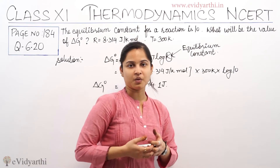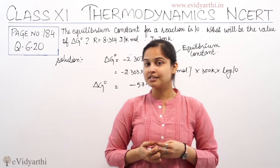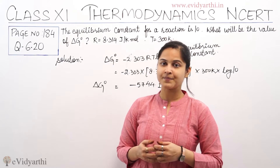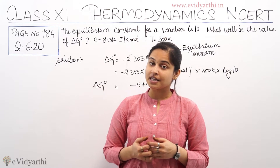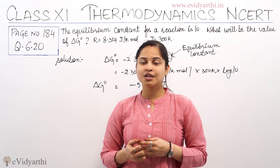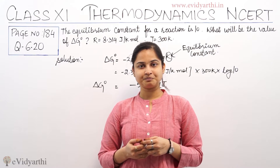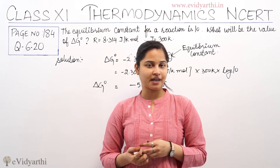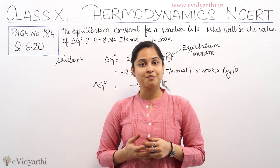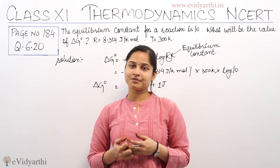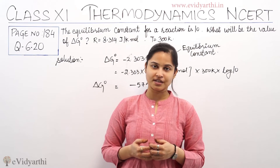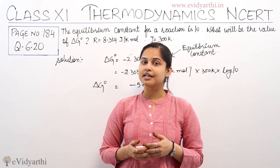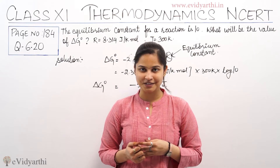Now, a question for you: if delta G naught is minus 5744.1 joules, will the reaction be spontaneous or not? Yes, you are thinking right. Our reaction will be spontaneous because the standard Gibbs free energy has a negative value, so the reaction will be spontaneous.